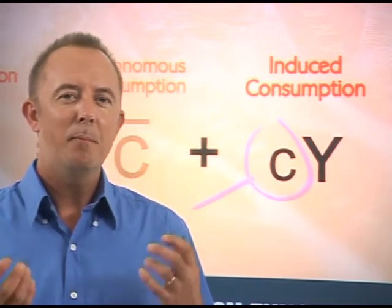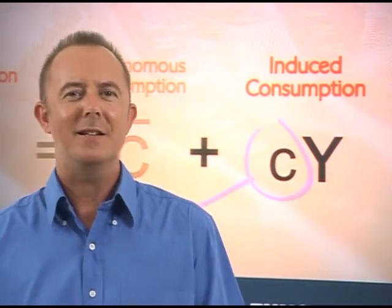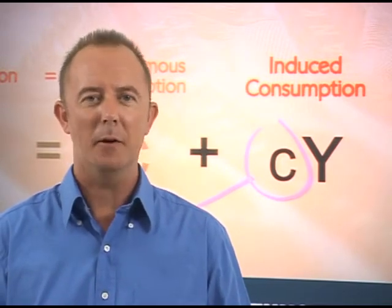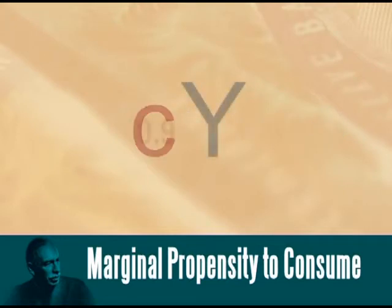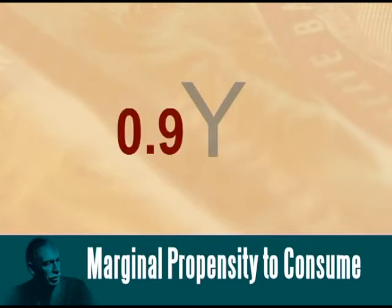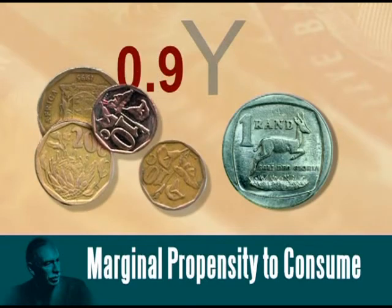This is an important part of our individual economic profile — our personality — and it plays a key role in the Keynesian model. The value of this marginal propensity is always less than 1 because consumption spending increases by less than income. If the marginal propensity to consume is 0.9, it indicates that for every 1 rand increase in income, households will increase their spending by 90 cents.